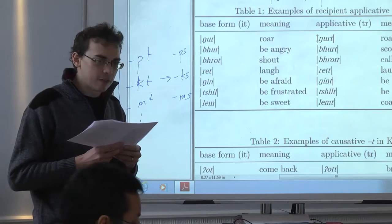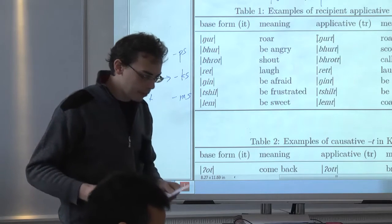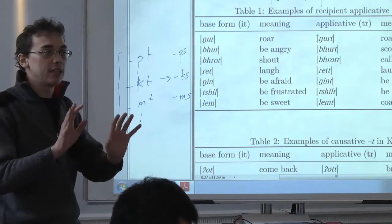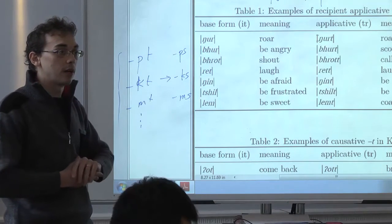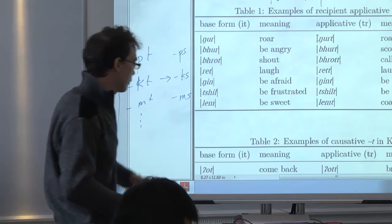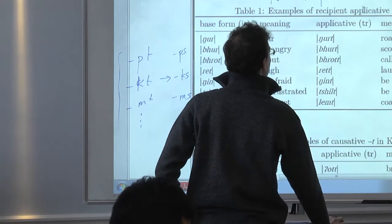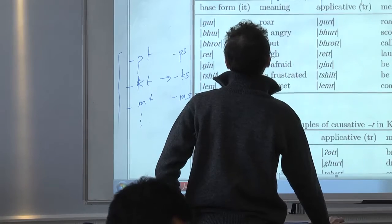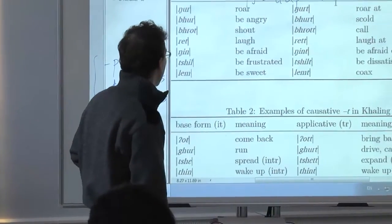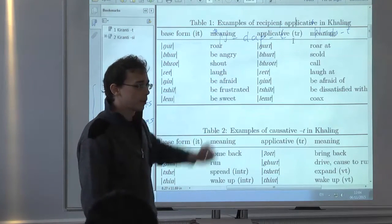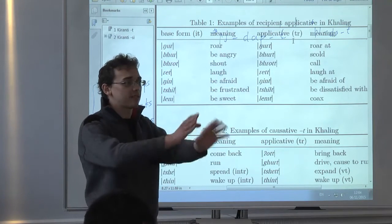So, outside of Kiranti, we don't have a nice example. So, I'm going to, in order to make you understand the meaning of these suffixes, I'm going to show you a few more from Khali, the language on computer data and fieldwork. So, here are examples of applicative in Khali. So, for instance, you have burl, be angry, burlt, to scold, to be angry at someone. Okay? Rit, laugh, ritt, laugh at.